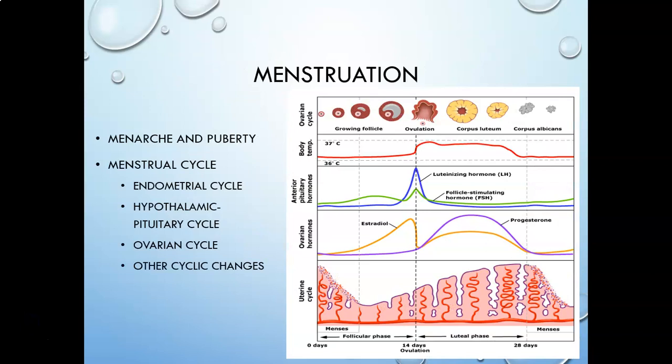A little bit about menstruation: menarche is the onset of menstruation — that first period, typically in the preteen years, though it varies from woman to woman. Usually menarche is actually at the end of puberty. Oftentimes we think it's the onset of puberty, but it is actually at the end of puberty. Other signs of puberty, such as breast development, happen long before menarche.